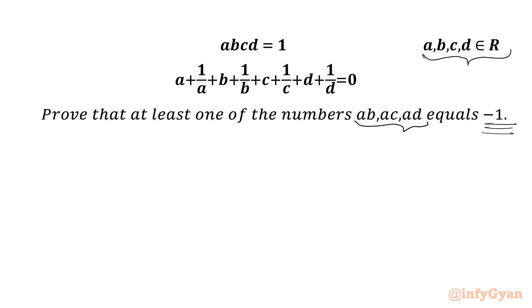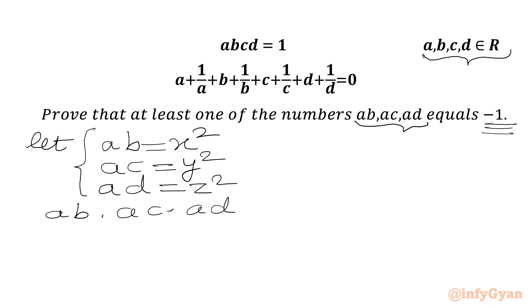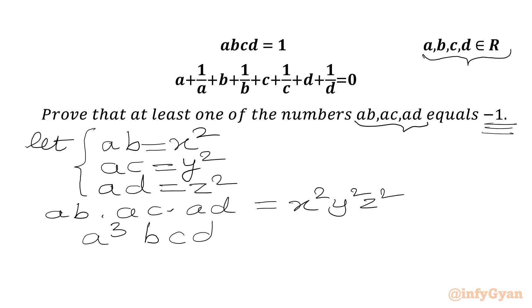Let's get started with our substitutions. I will consider our first substitution AB = x². Then we put AC = y², and AD = z². Now we are going to multiply these three equations: AB × AC × AD = x² × y² × z². This gives us A³ × BCD = (xyz)².